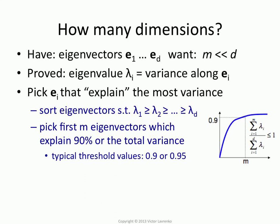So that's the way you usually pick. You pick a threshold value, 90% or 95%.